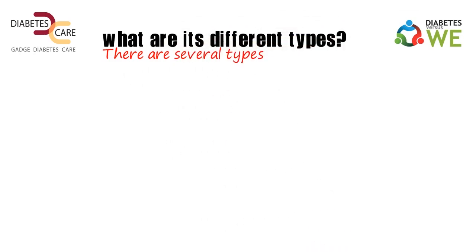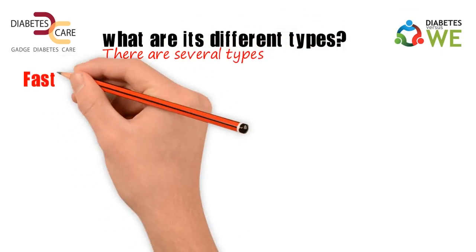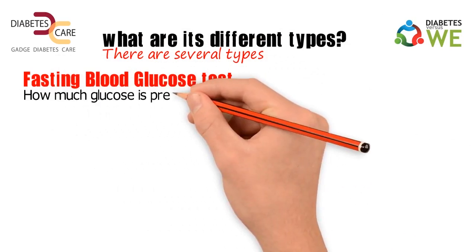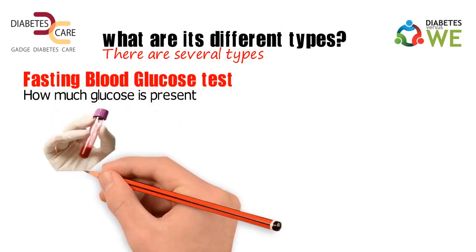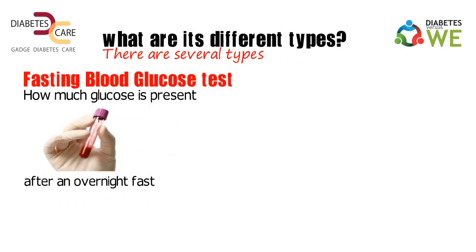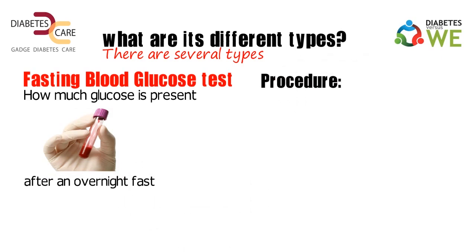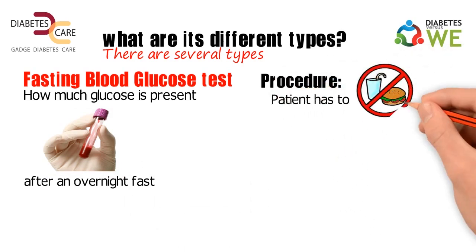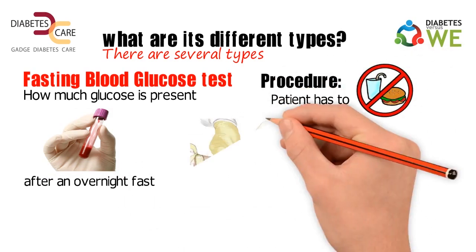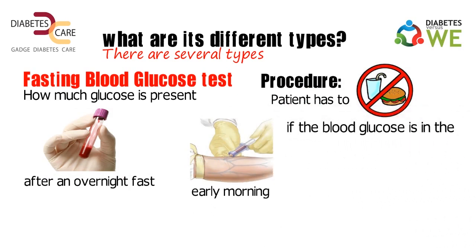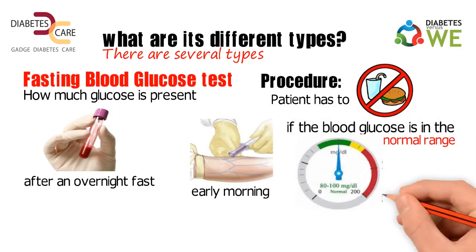There are several types of blood glucose tests. The first is the fasting blood glucose test. This test determines how much glucose is present in a blood sample after an overnight fast. The procedure requires the patient to fast overnight, and blood is drawn early morning to see if the blood glucose is in the normal range.